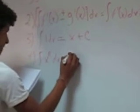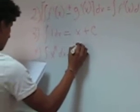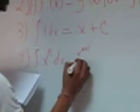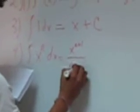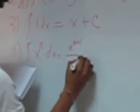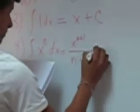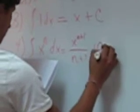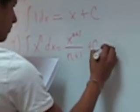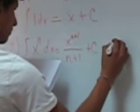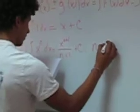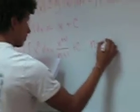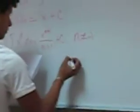The fourth one is the rule of integration for powers. In this case, we have the integral of x to the n times dx, which result is going to be x to the n plus 1 over n plus 1. This rule has one condition: n has to be different from negative 1.